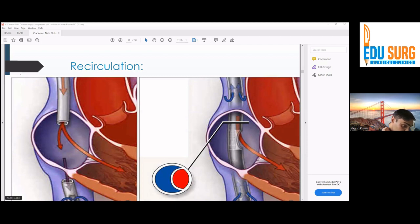You can see the configuration. If this cannula is near to the drainage cannula, most of the blood will be sucked out from the return cannula and just continue to rotate round and round. It's not going to the right ventricle.